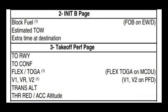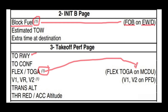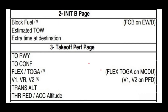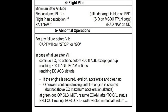Number two is the INIT B page. Anytime you see a '1' it requires a cross-check. Block fuel — we're going to say 19,000 pounds, and you look at the fuel on board on the EWD page. Takeoff performance: review the runway, then FLEX and TOGA in the MCDU, make sure it matches. For V2, you're looking at the MCDU and cross-checking on the PFD. Moving over to flight plan — talk about MSA, another cross-check, making sure your target altitude is correct on the PFD. Radio navs. Then abnormal: the captain decides if it's a stop or go, and we talk about what to do in case of an engine failure.